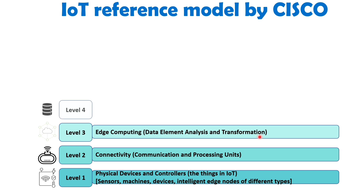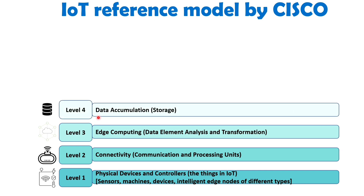Level four focuses on Data Accumulation and Storage. This layer involves storing the collected data from IoT devices. It includes various storage technologies and systems that can handle large volumes of data generated by the IoT ecosystem. This data can be stored locally or in the cloud depending on the specific requirements of the IoT solution.